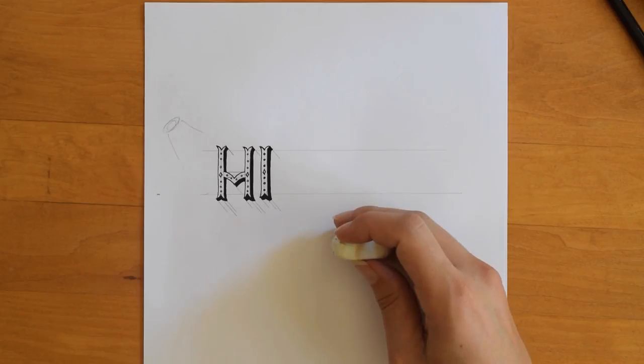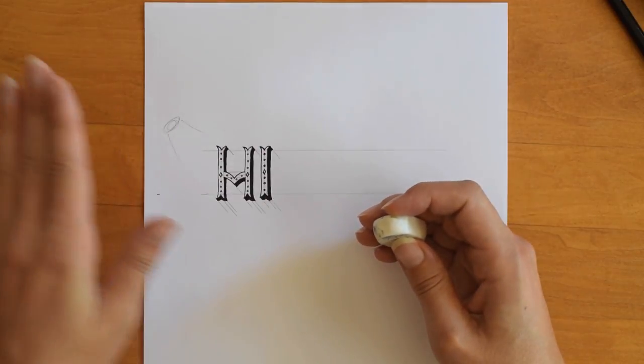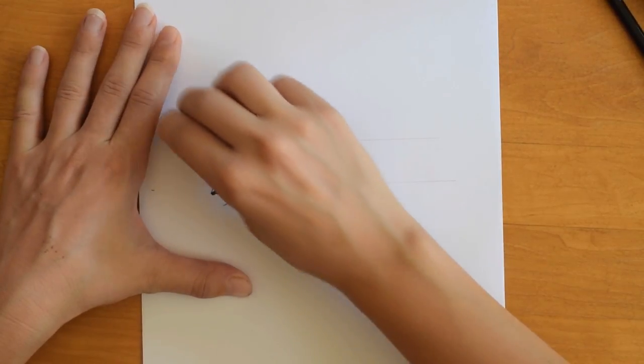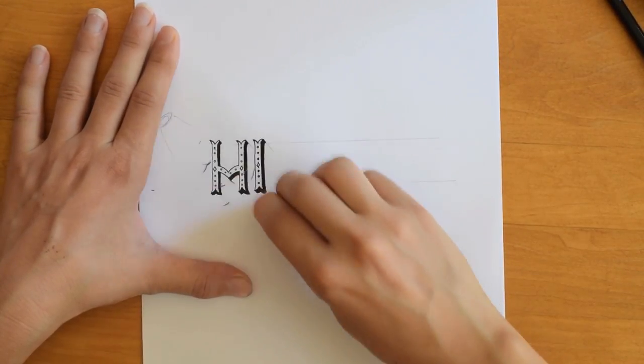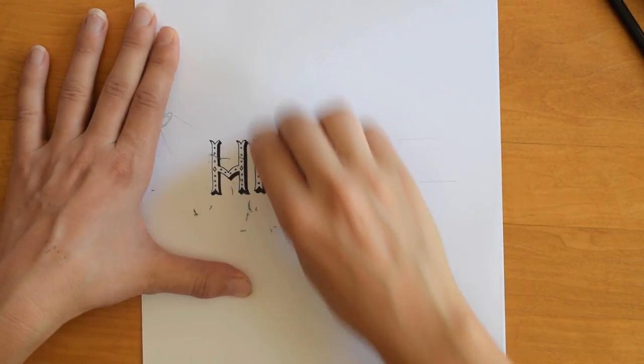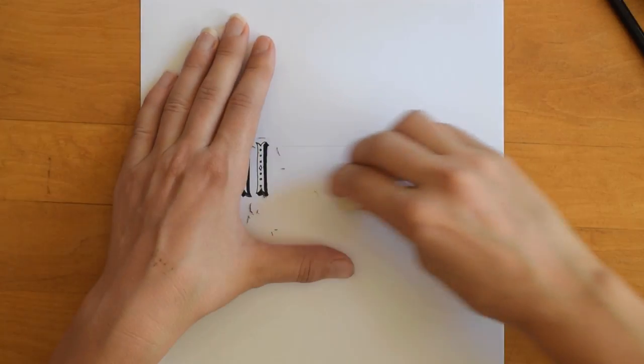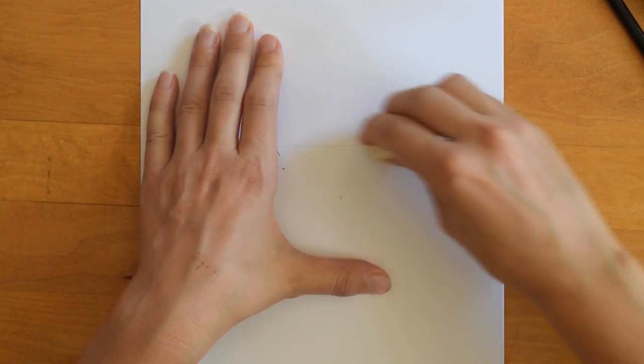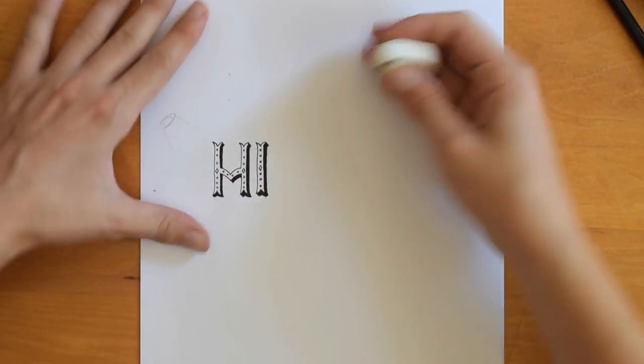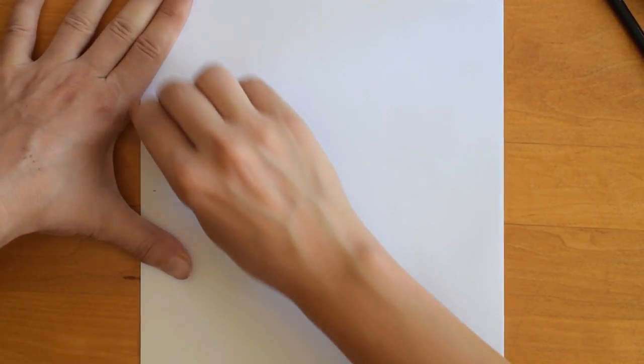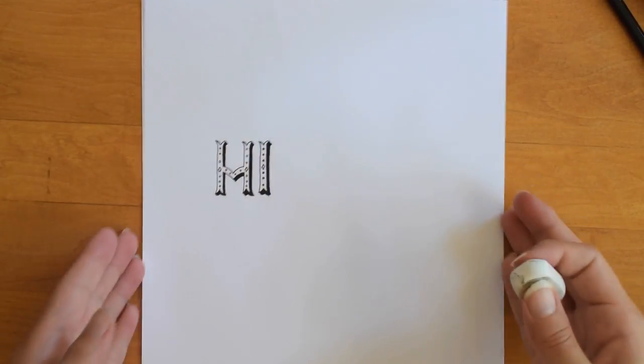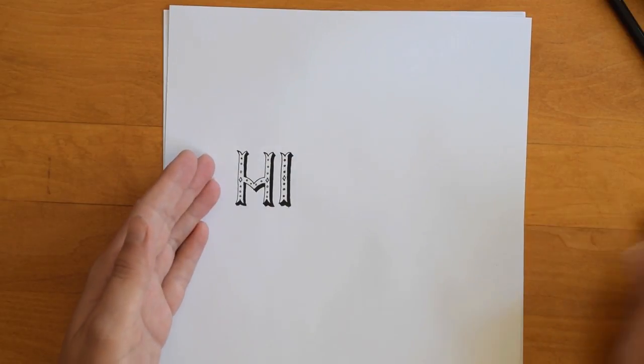It's been about three minutes and my ink is dry, so I am going to erase my pencil guidelines here. This is also a reason to draw your pencil guidelines lightly. After you erase, there's no trace of these guidelines. Then you've got your finished word here.